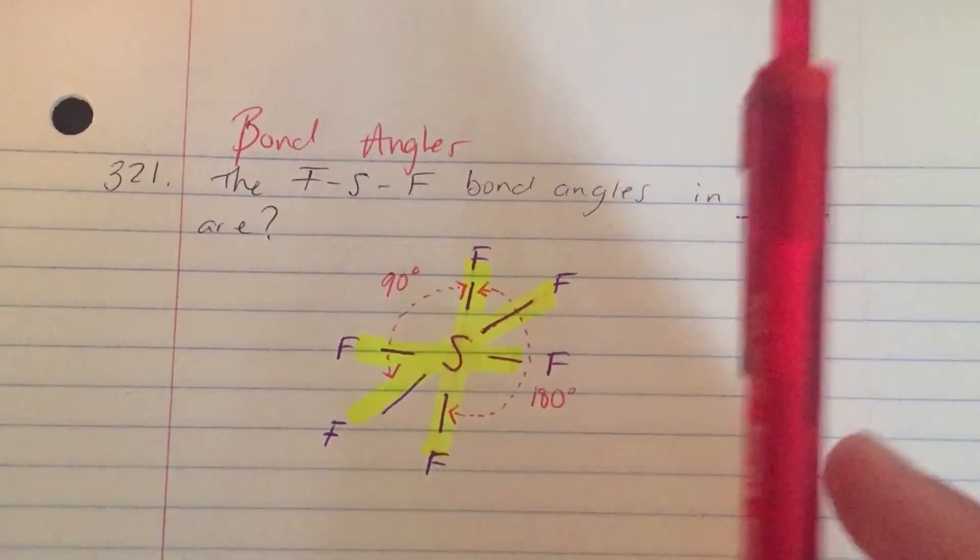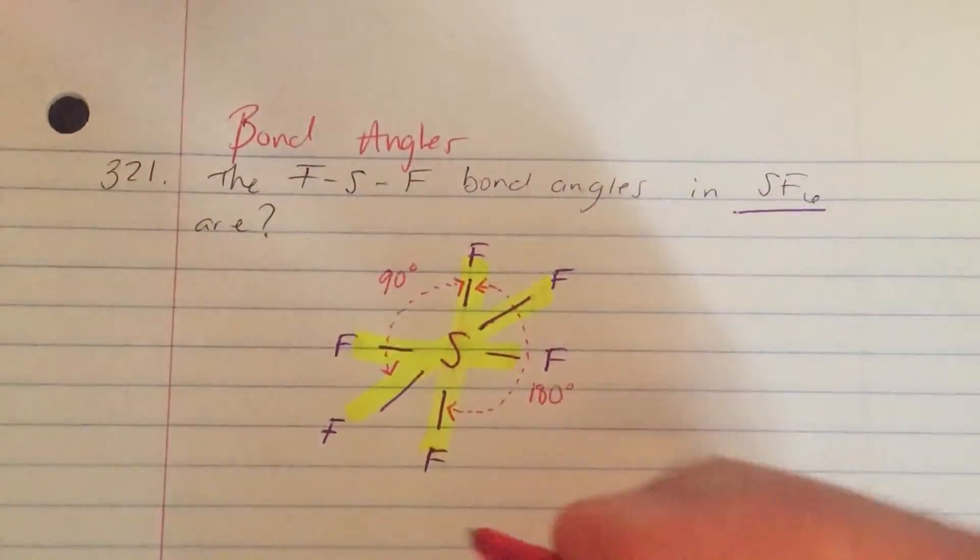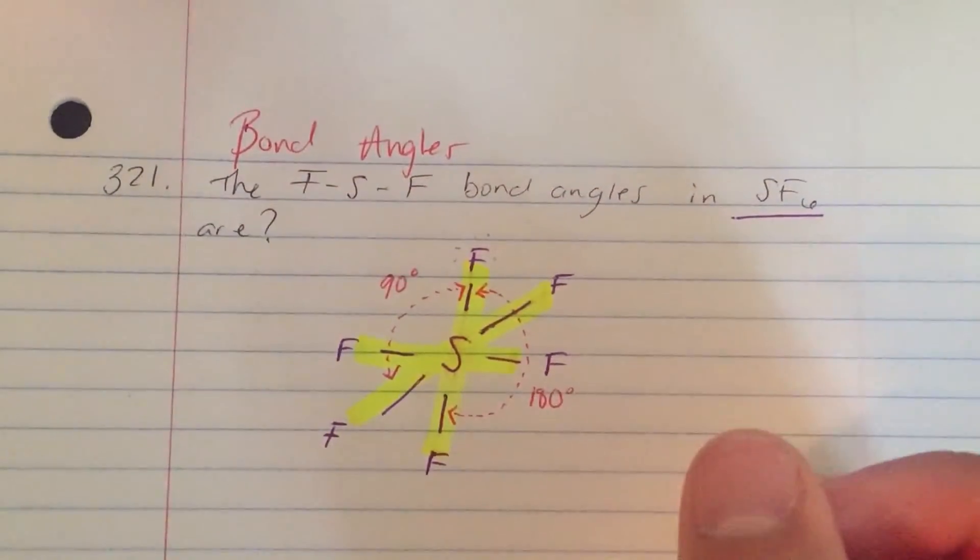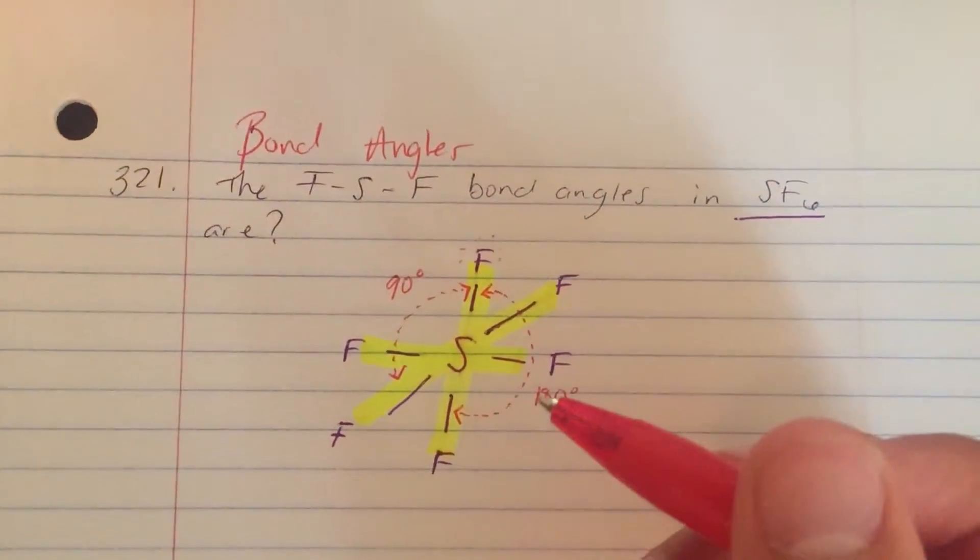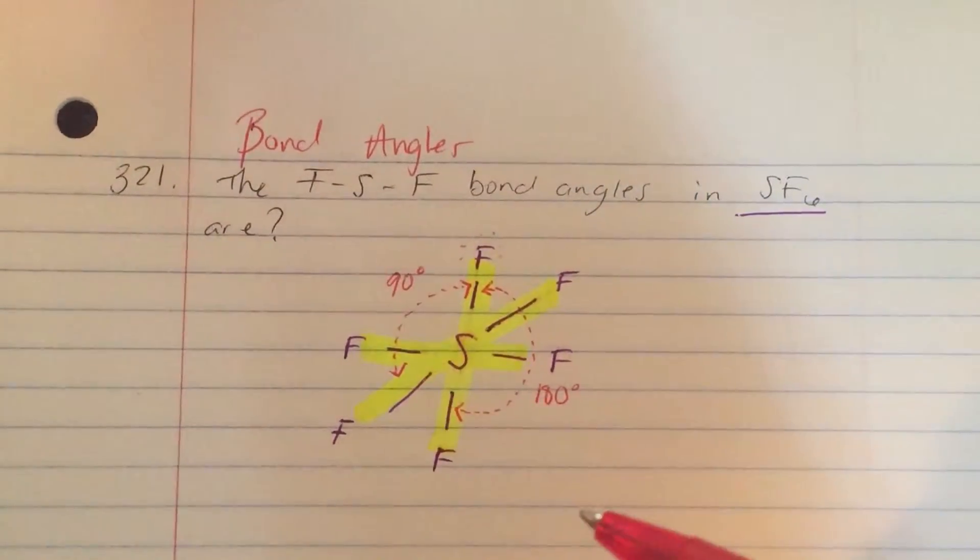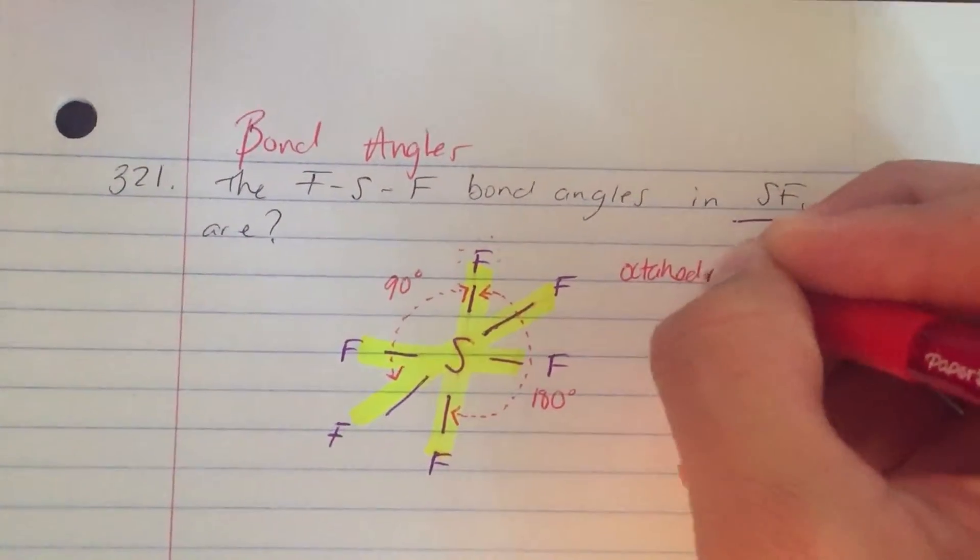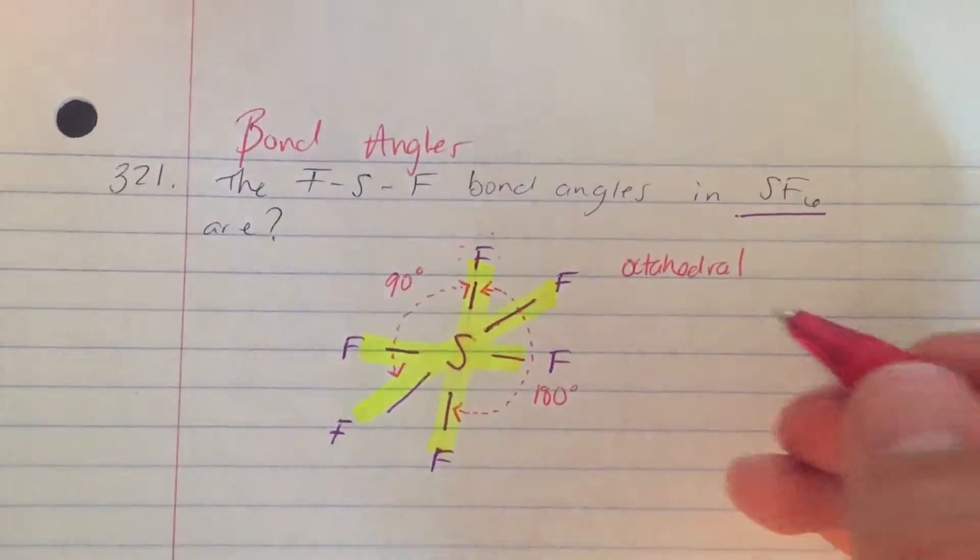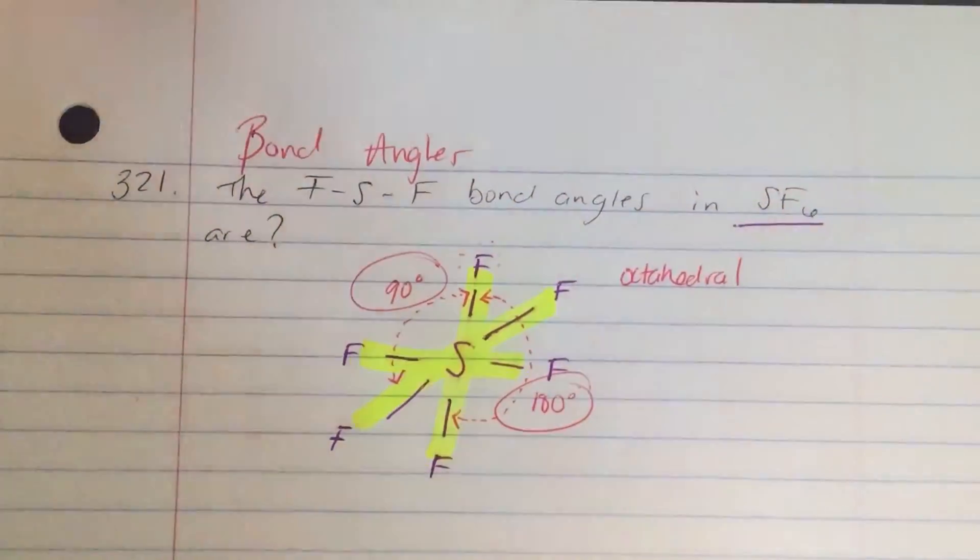So this structure, this Lewis structure, I forgot to put all the F lone pairs but that doesn't matter here because we're looking at angles. When it has 90 and 180 degree angles we call this an octahedral. Obviously our angles will be 90 and 180, and that's our answer.